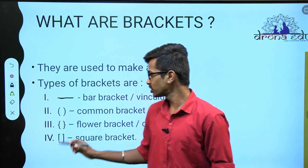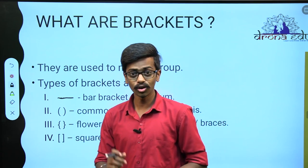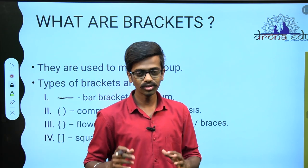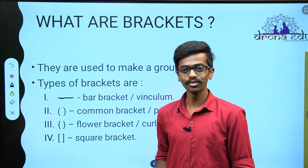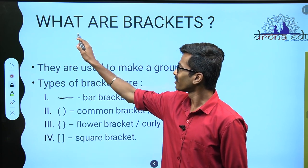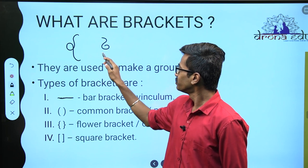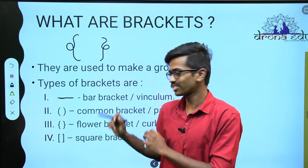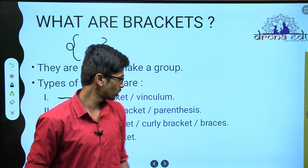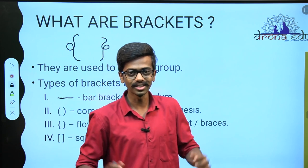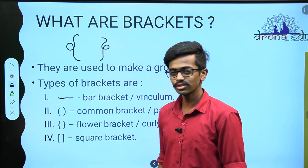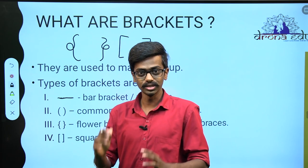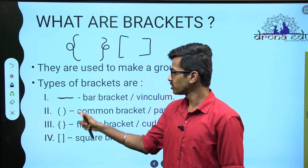After the bar bracket comes the common bracket or the parenthesis. Next comes the flower bracket — it looks like a flower when you draw it. They are also called braces or curly brackets because they are all curly. Next you have square brackets, also called big brackets — that is the biggest bracket. And when you are removing brackets, you do it in the same order.